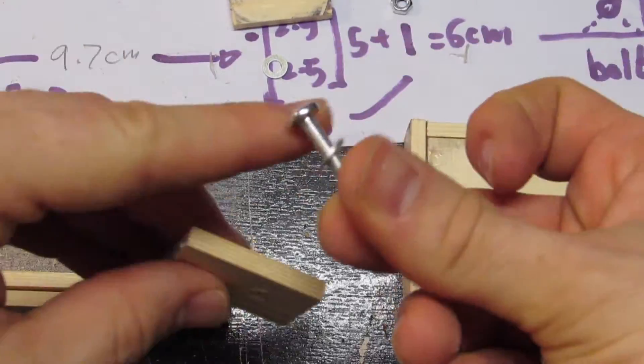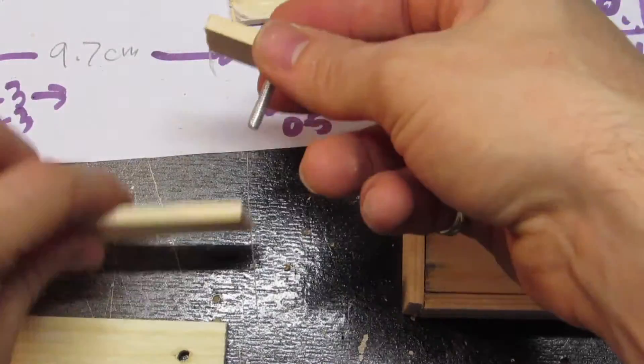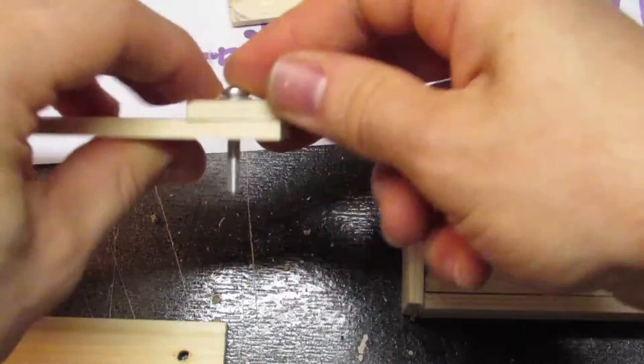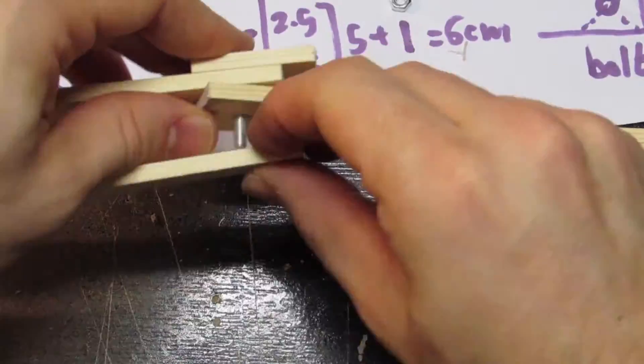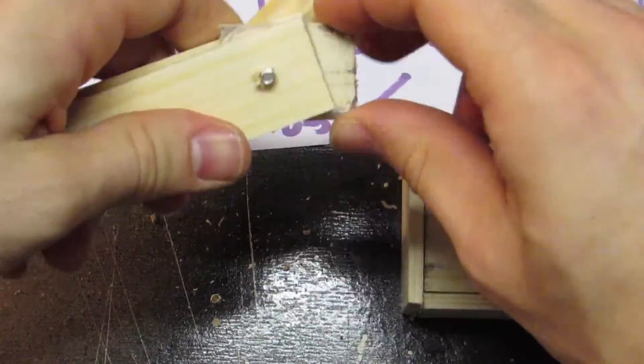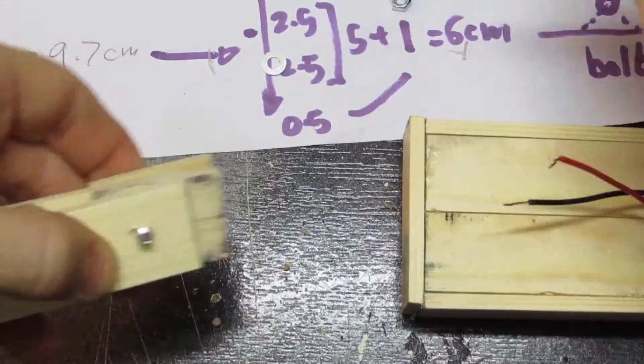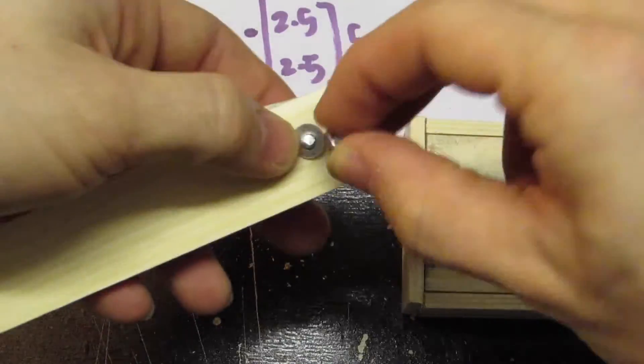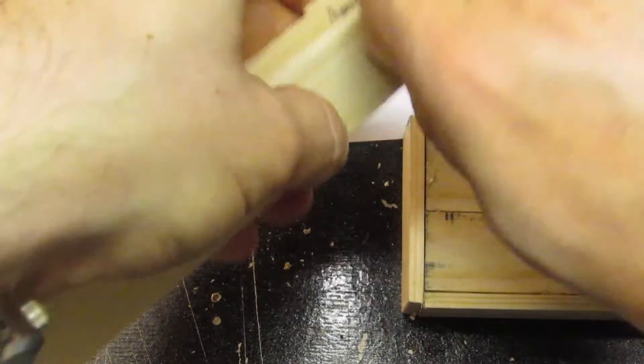Now take two 3.5cm pieces. Thread a washer onto one of the bolts and through onto one of the 29cm arm pieces. Then the other 3.5cm and another 29cm arm piece. Then screw it in place with the washer to allow for movement and then the nut on top. Tighten it to finger tightness, we'll come back with the screwdriver later.